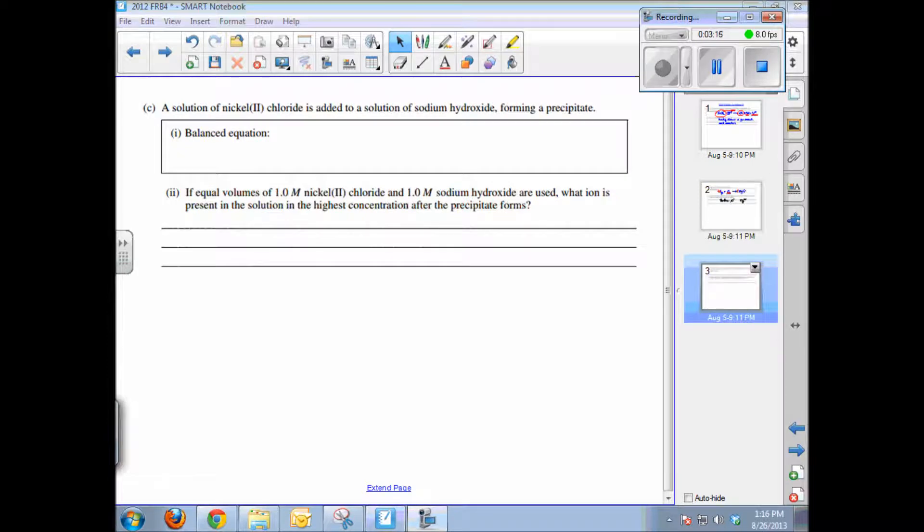Part C: a solution of nickel(II) chloride is added to a solution of sodium hydroxide, forming a precipitate. If a precipitate has formed, you know it's a double exchange reaction; just got to figure out what the precipitate is. The two possible products of the double exchange are sodium chloride—we know that's not the precipitate, sodium compounds are always soluble—so the other compound, nickel(II) hydroxide, a metal hydroxide which are very often insoluble, is our very likely precipitate.